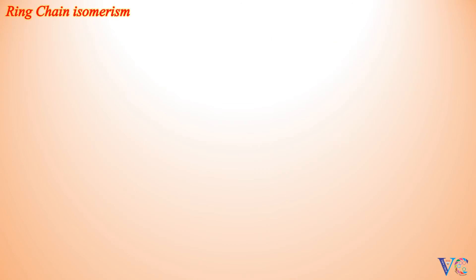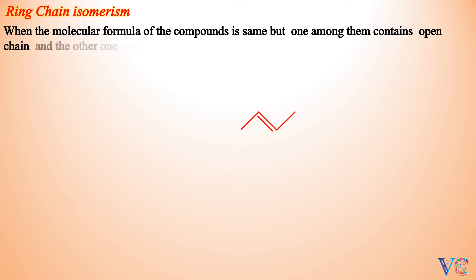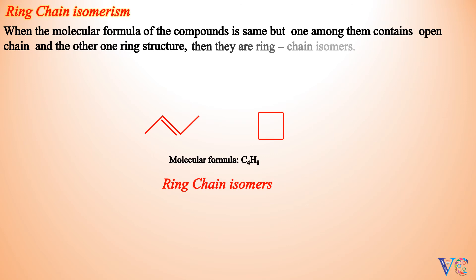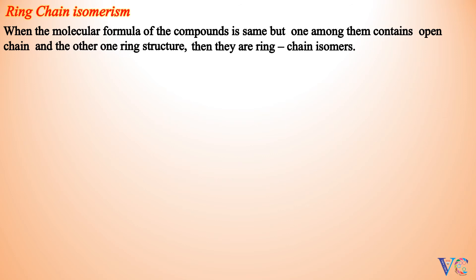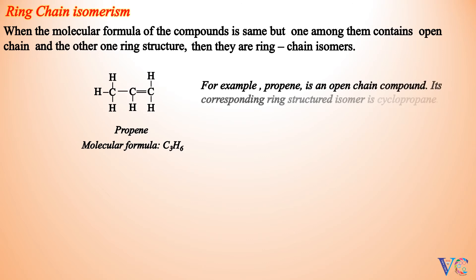Ring Chain Isomerism: when the molecular formula of compounds is the same but one contains an open chain and the other a ring structure, they are ring chain isomers. For example, propene is an open chain compound; its corresponding ring-structured isomer is cyclopropane.